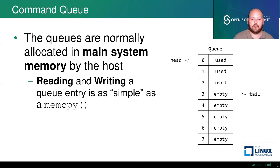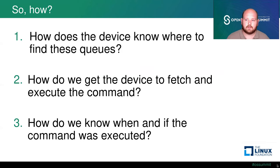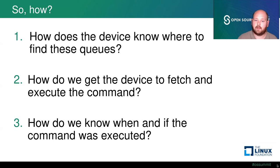The queues are normally allocated in main system memory, which means from the host point of view, writing a command or reading a completion entry is as simple as a memory copy. This brings us to some questions: how does the controller know where to find these queues? How do we get the device to fetch and execute commands once we've written something? And how do we know if and when a command was executed?